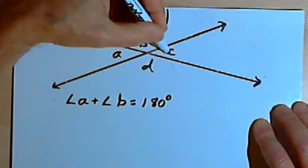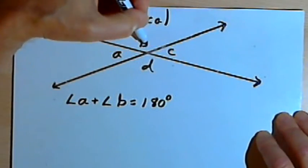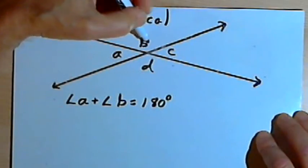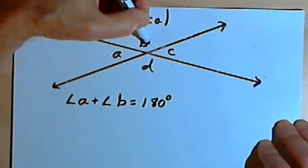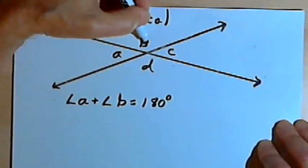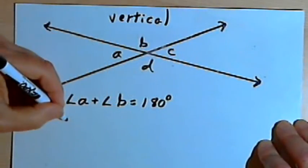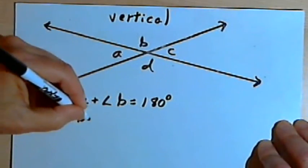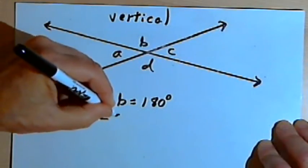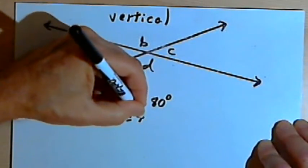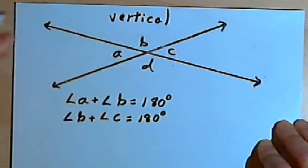Now angle B and angle C also lie along the same line, and are adjacent to each other, so they add up to 180 degrees. They're supplementary. So angle B plus angle C equal 180 degrees.